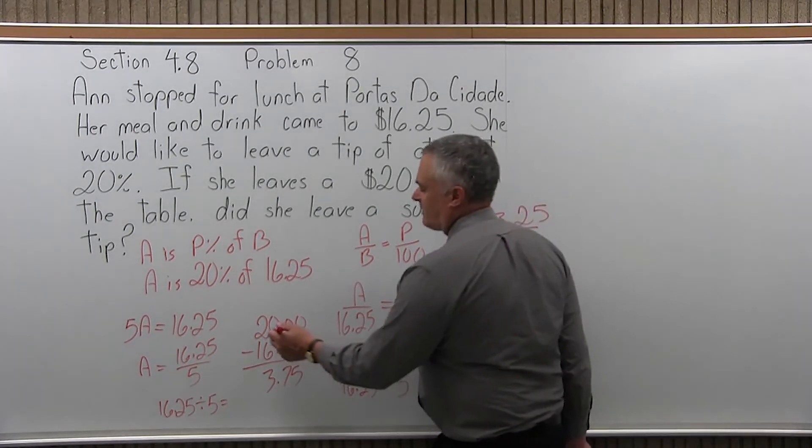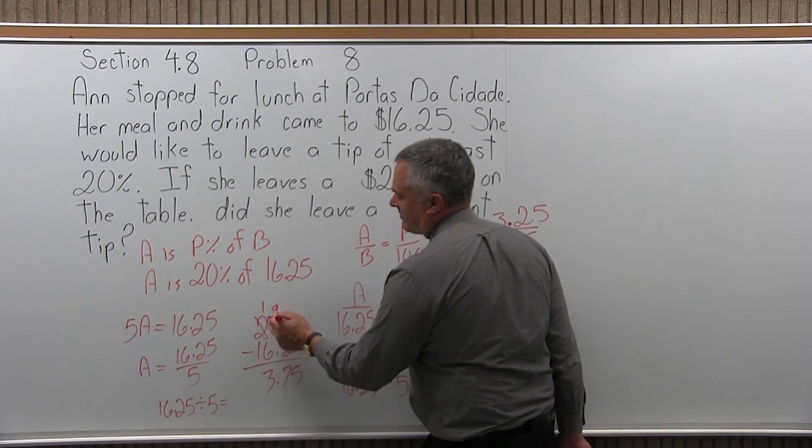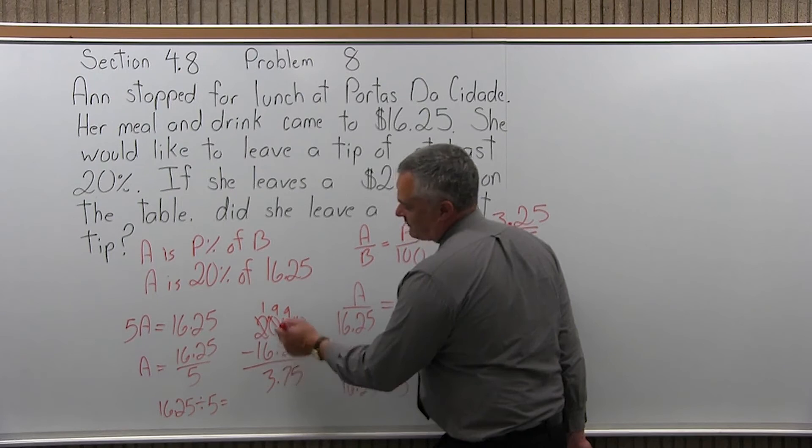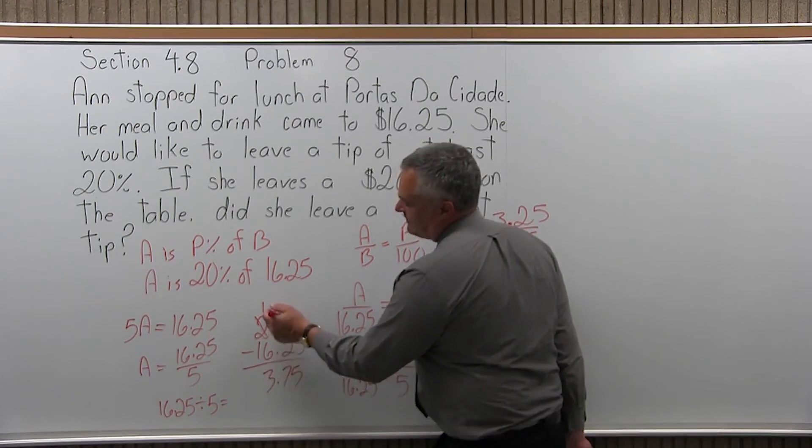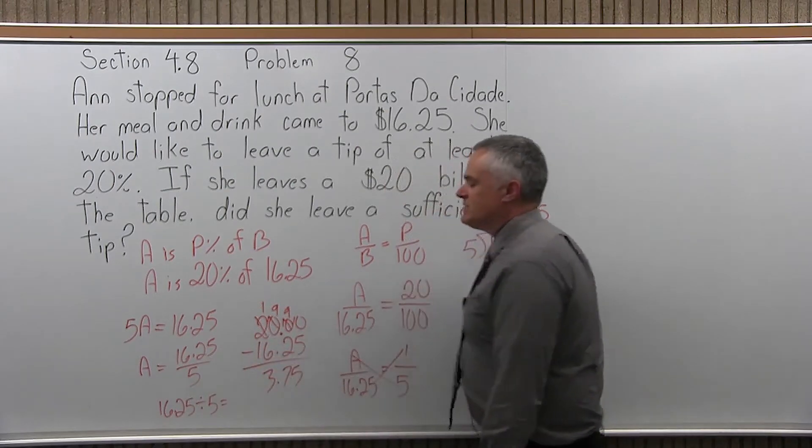But if you can't make change, you have to borrow from the 2, make it a 1, make that a 10, make that a 9, make this a 10, 9, 10, like that. So, you get 10 minus 5 is 5, 9 minus 2 is 7, 9 minus 6 is 3, 1 minus 1 is nothing. So, you still get it.